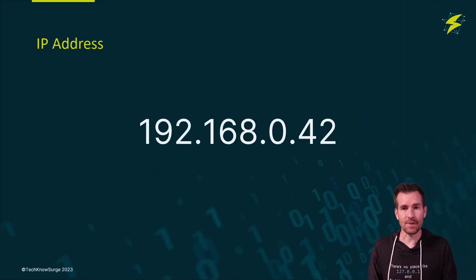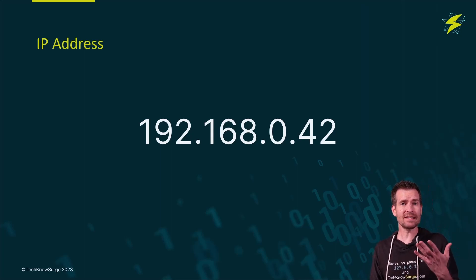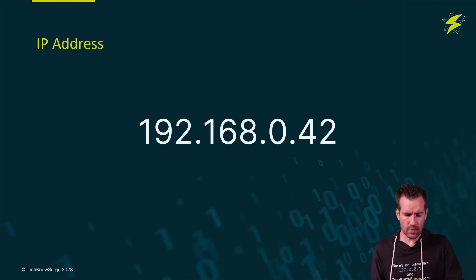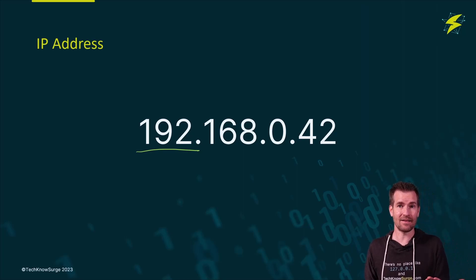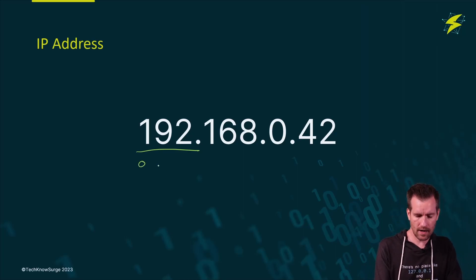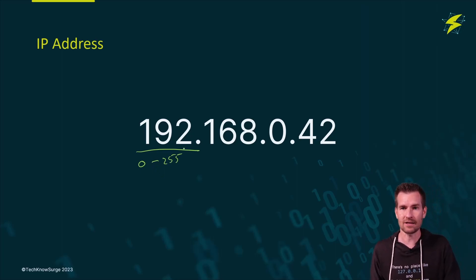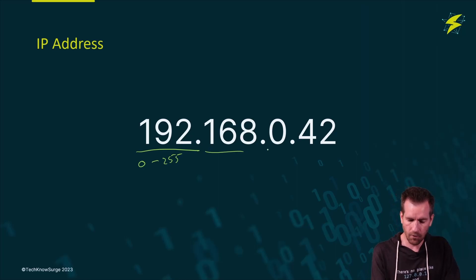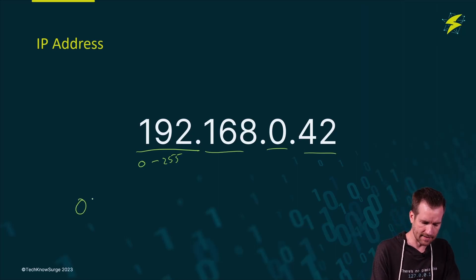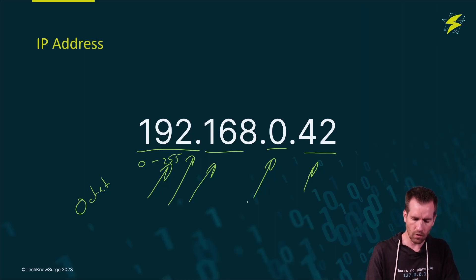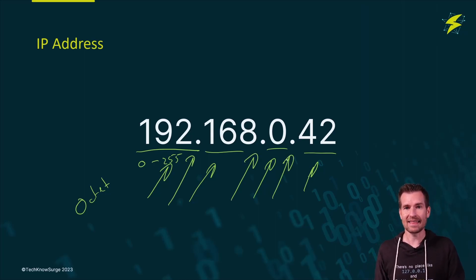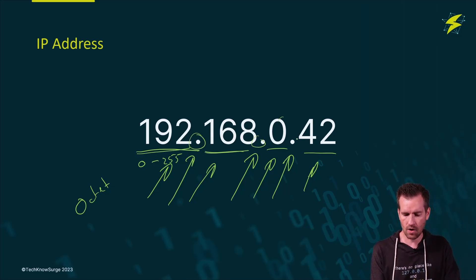This is one example of an IP address. IP addresses are usually displayed in decimal format. A 192 is just a simple base 10 decimal format, what we're used to working with. However, binary is on the back end of this. Each one of these numbers has a range from 0 to 255 because there are eight bits for each one of these sections. You'll notice that there are four sections, or what we call octets, and those octets are separated by a period or a dot. So we'd say this IP address is 192.168.0.42.